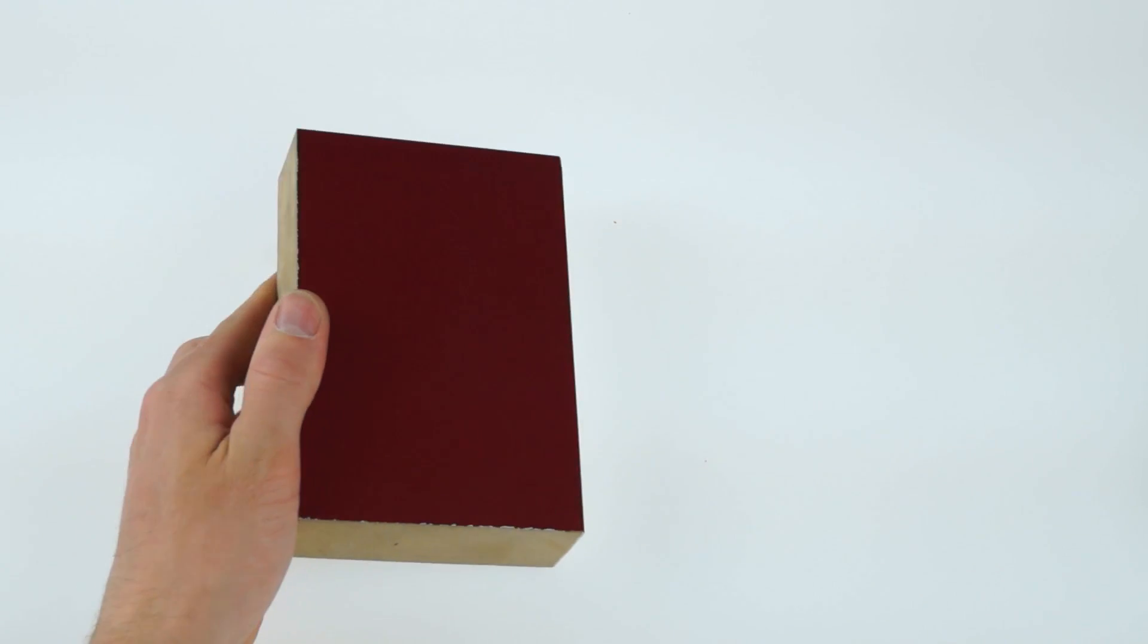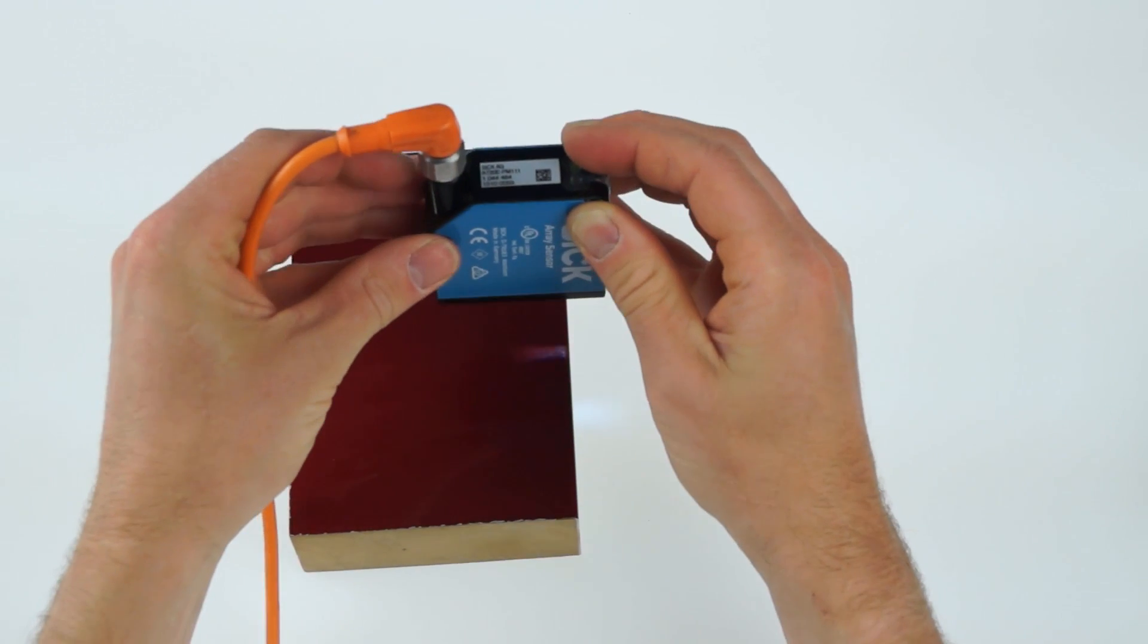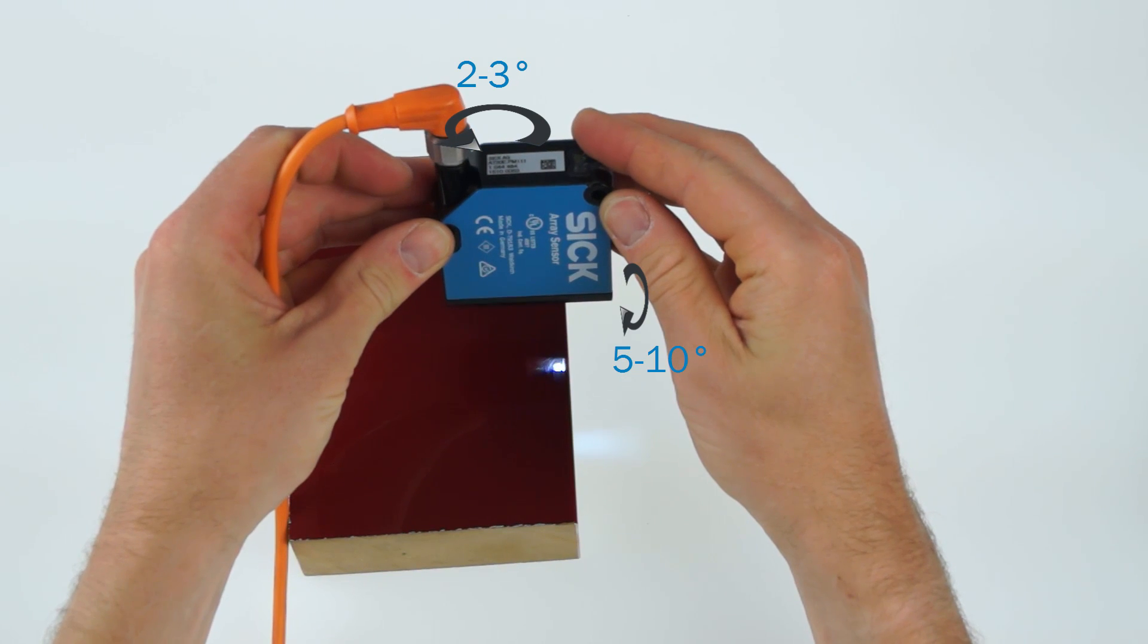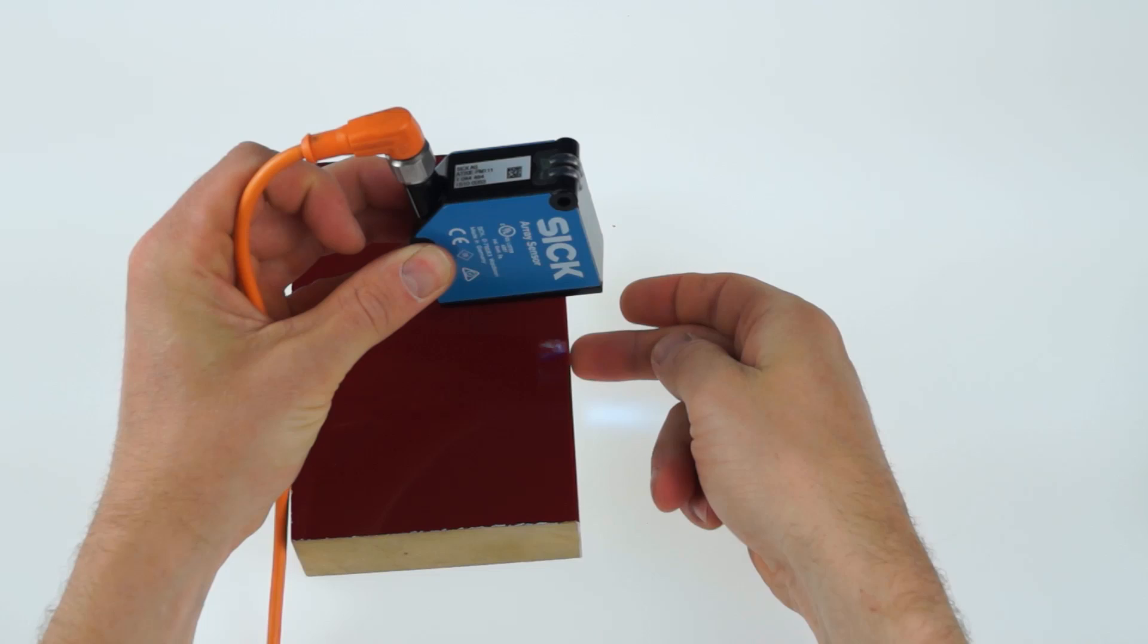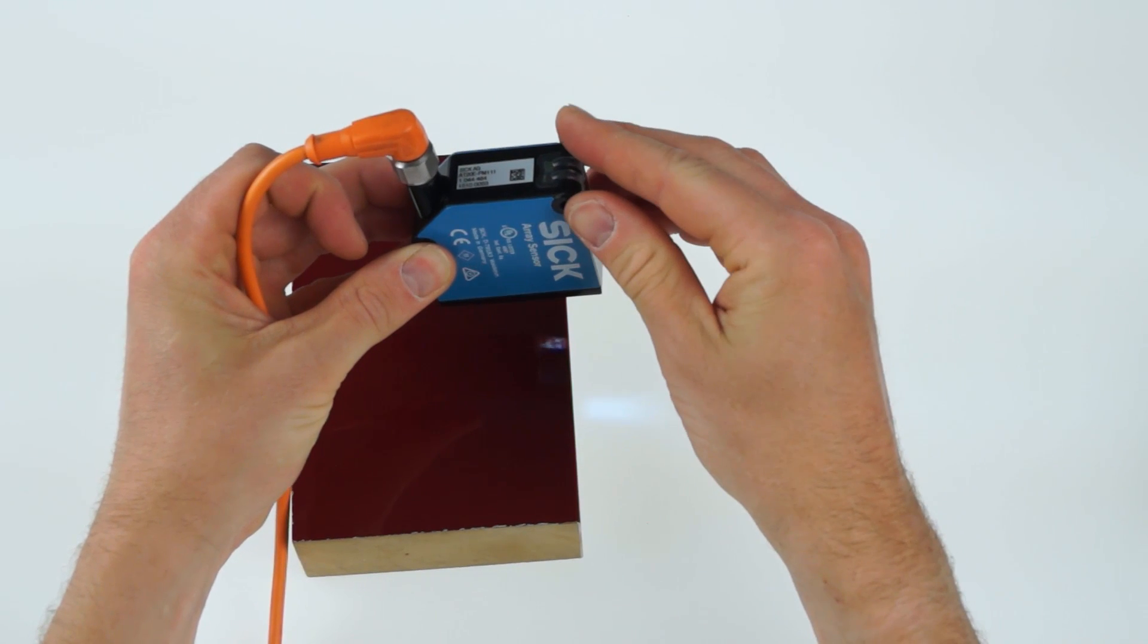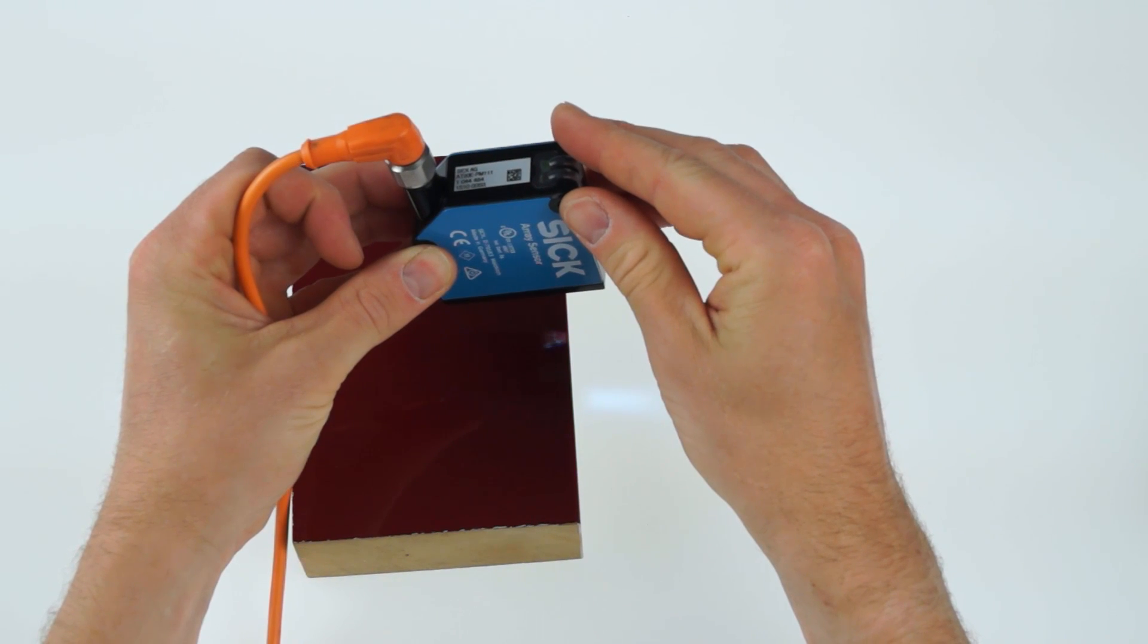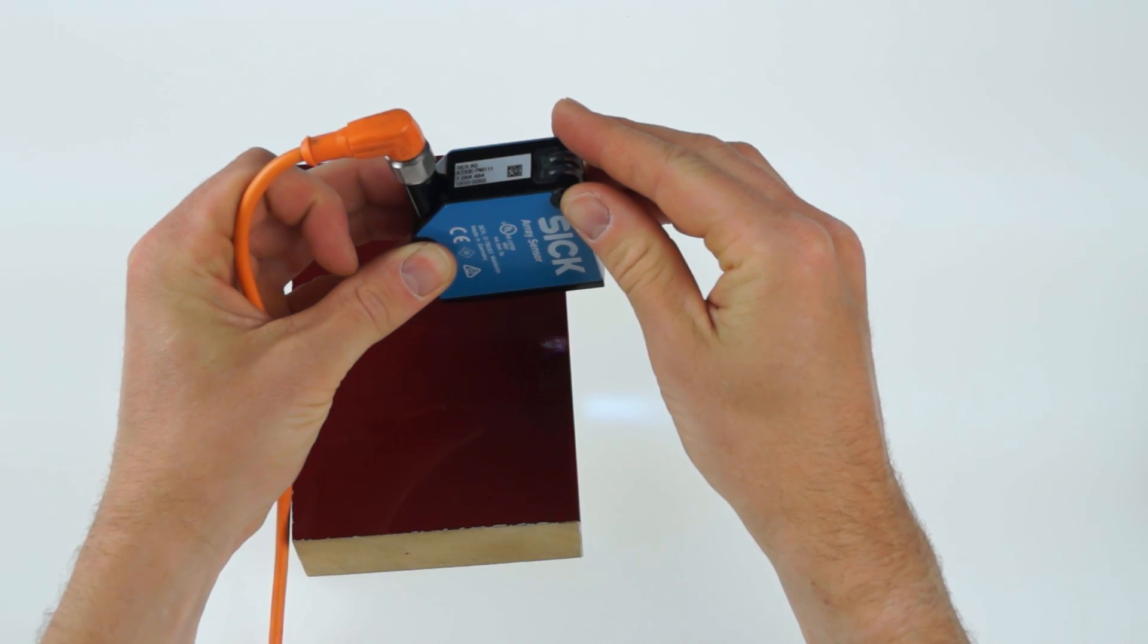If thicker material like this coated wooden board needs to be detected, it is recommended to work with an approach angle of 2 to 3 degrees in order to avoid double switching at the edges which come from reflections at the lower edge. The angle needs to be in a way that the lower part of the object is shadowed.